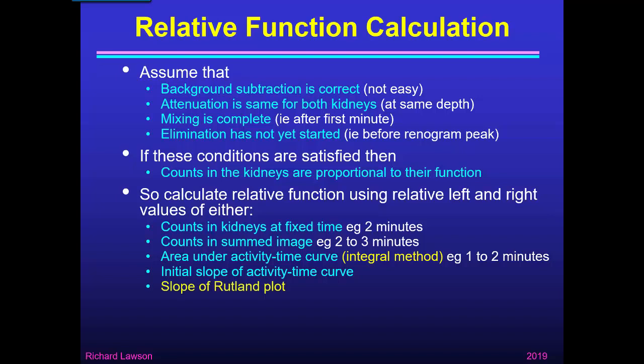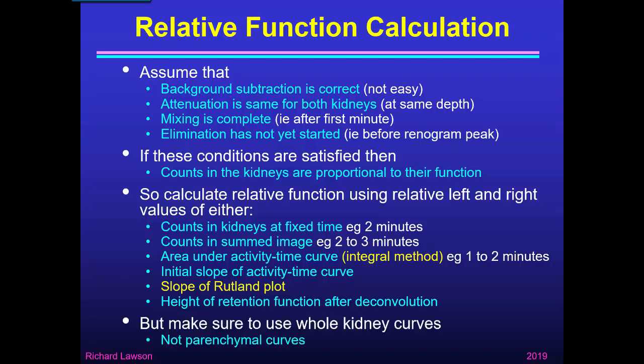If we're using the Rutland plot, the slope of the Rutland plot is easy to determine because it is a straight line. Or if our software includes deconvolution, we can use the height of the retention function as a measure of relative function. The recommended methods are the integral method or the slope of the Rutland plot, but any of these techniques should give the same relative function as long as the four criteria are satisfied. Make sure that you use the whole kidney curves, not the parenchymal curves — the relative function must come from curves including the whole of the kidney.